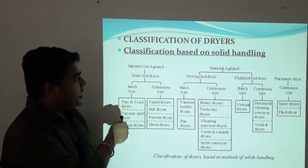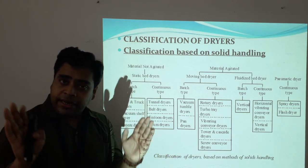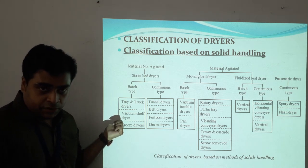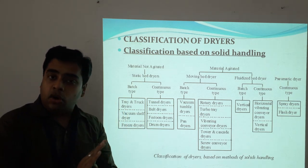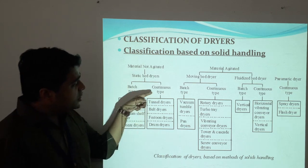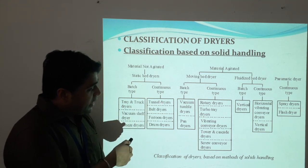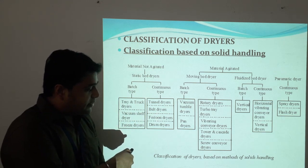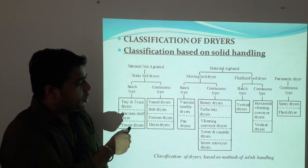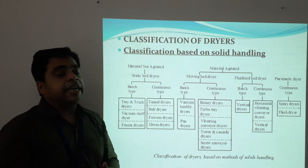In the batch type of static bed dryers, where the material is not stirred and is fixed, we have tray and truck dryers, vacuum shelf dryers, and freeze dryers. In the continuous type of static bed dryers, where we continuously add feed and drying goes on occurring, we have tunnel type dryers, bed dryers, festoon dryers, and drum dryers.